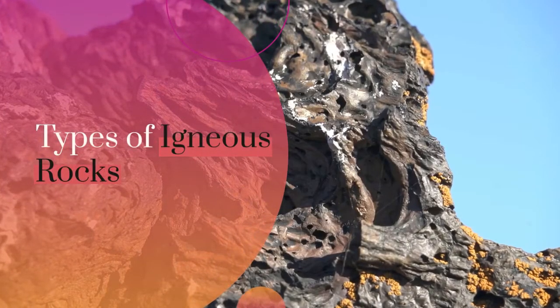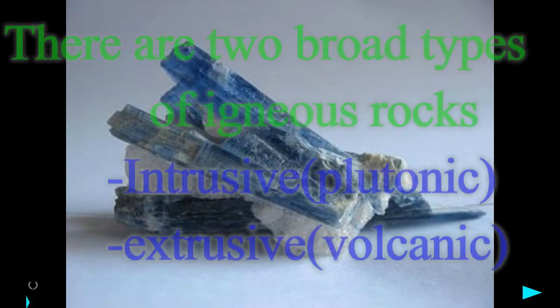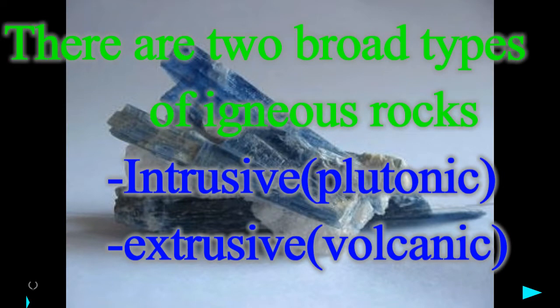Types of igneous rocks. There are two broad types of igneous rocks: intrusive (plutonic) rocks and extrusive (volcanic) rocks.